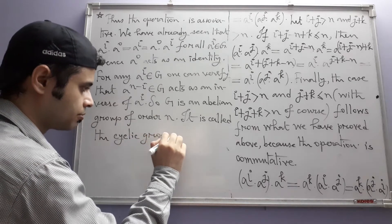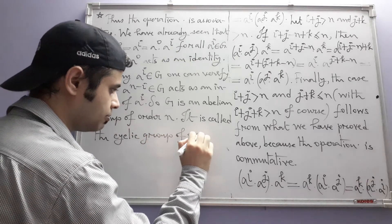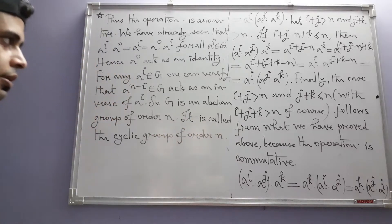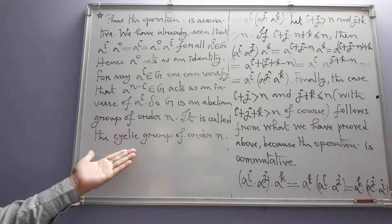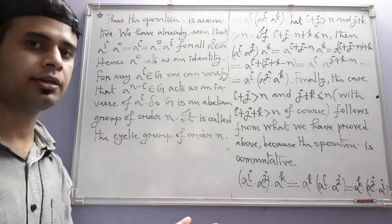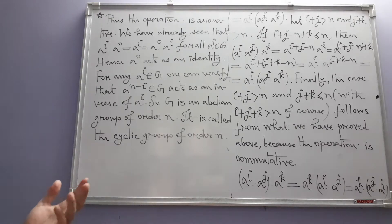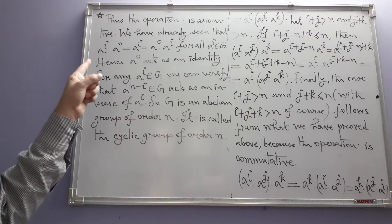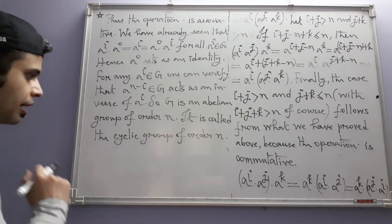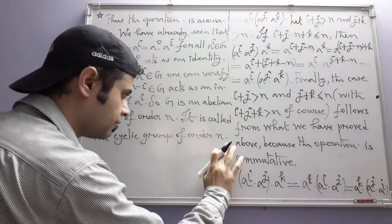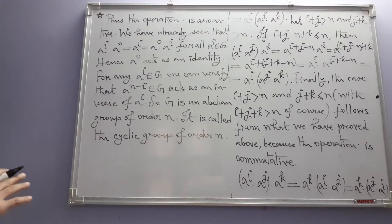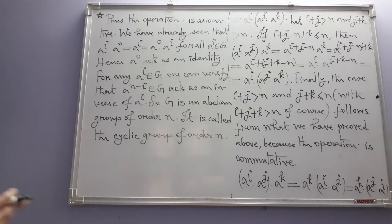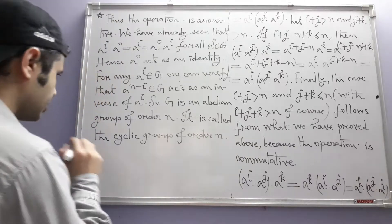Cyclic group of order n. There is a reason for using the article 'the' here — it's because it can be shown that any two cyclic groups of order n are actually similar in the sense that we discussed in part one. There is a geometric realization of this group that will tell you exactly why cyclic groups of order n are similar in that sense.